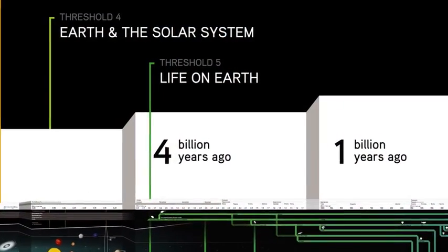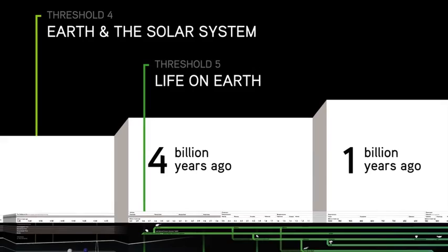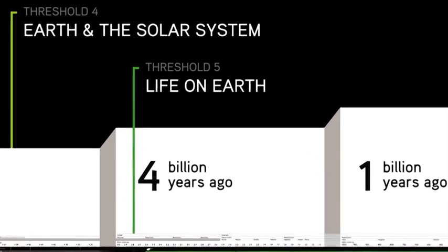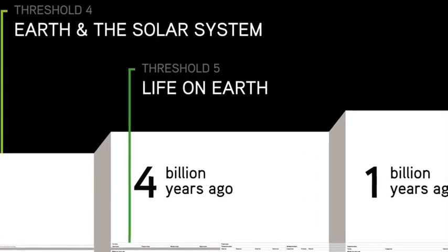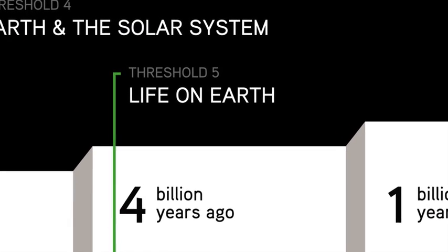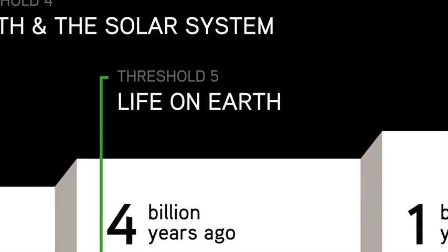This is all pointing to the creation of our own species, Homo sapiens. We begin with the origins of life. This is the fifth major threshold of increasing complexity in our course. At each of these thresholds, something new seems to appear in the universe, something with entirely new qualities.